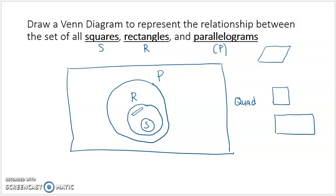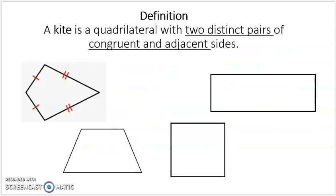So there's a relationship between parallelograms, rectangles, and squares. The next and last one we're going to do in this video involves kites, so I'll go over the definition of a kite. A kite is a quadrilateral with two distinct pairs of congruent and adjacent sides. Adjacent sides means that they share a vertex.